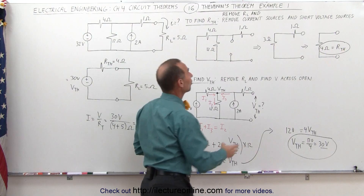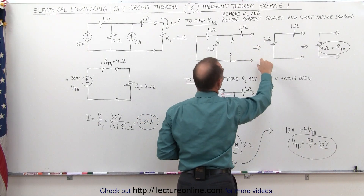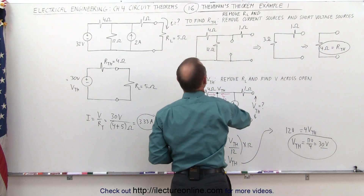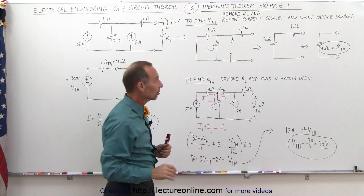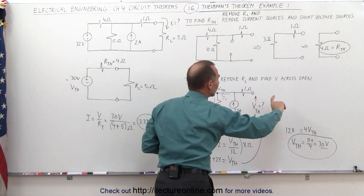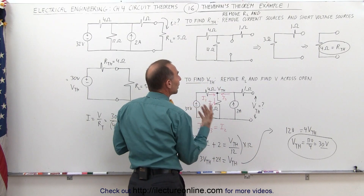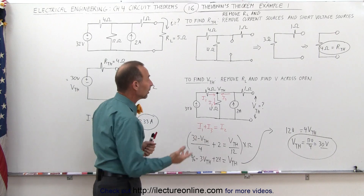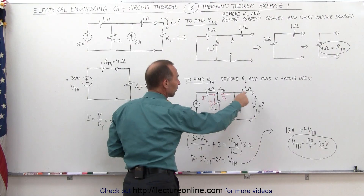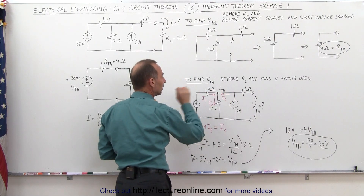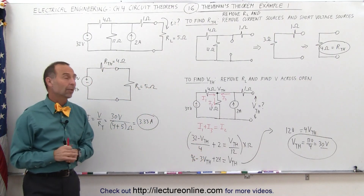Notice how easy it makes the problem. All we have to do is convert our linear circuit into the Thevenin circuit. The method to find Thevenin resistance: remove the load resistor, remove any current sources, and short out any voltage sources, then calculate the resistance of the remaining circuit. For the Thevenin voltage: remove the load resistor and solve for the open-circuit voltage using whatever method is convenient — here we used node analysis. We added all currents entering and set equal to those leaving, and solved for the Thevenin voltage.